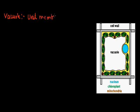These structures are covered by unit membranes, and this membrane is called the tonoplast. This membrane is also made up of lipids and proteins.